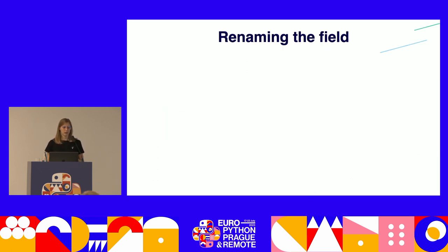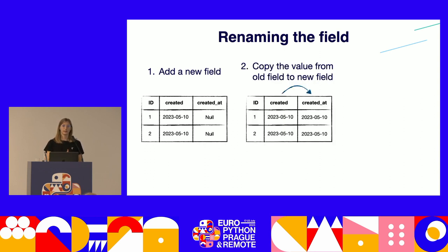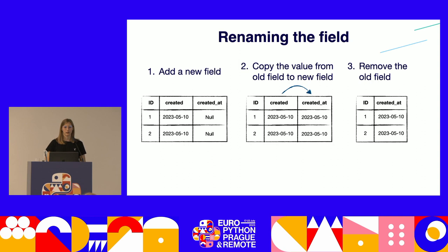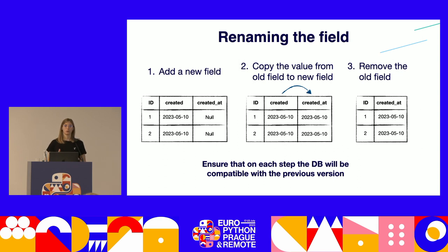The second operation was renaming the created field. To ensure compatibility, we perform changes in three main steps: first, add a new field next to the existing one; second, copy data from the old field to the new one; and finally, remove the old field. Importantly, at each of these steps we must ensure the database remains compatible with the previous version of the system.